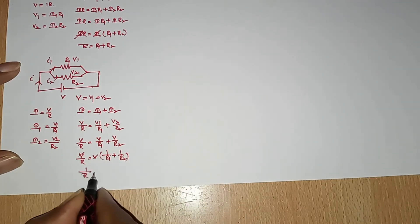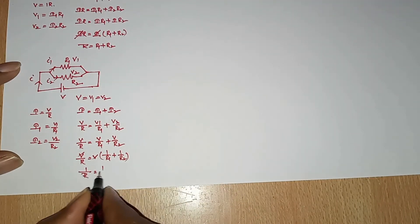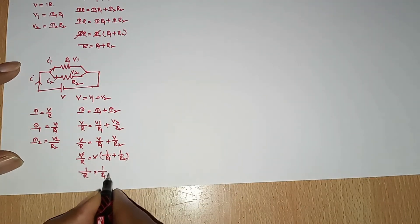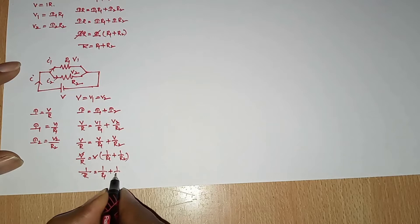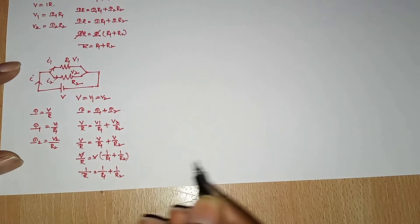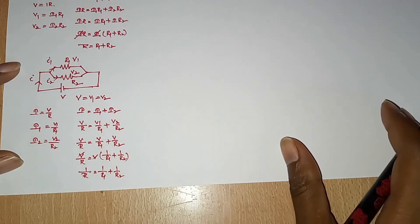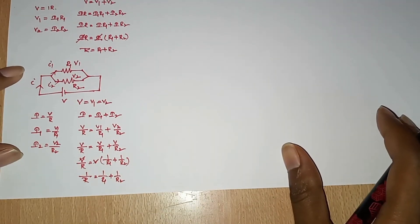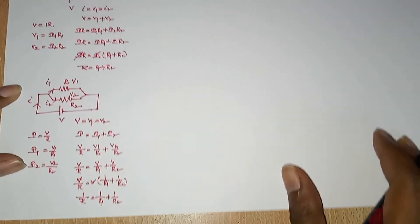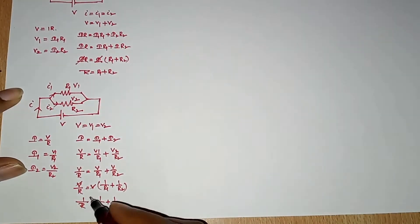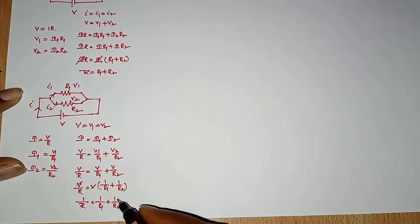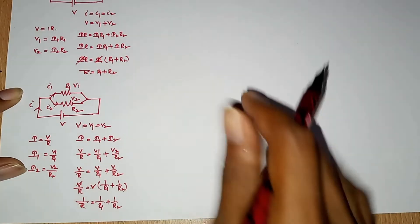Substituting and cancelling V, we get: 1 by R equal to 1 by R1 plus 1 by R2. For N resistors connected in parallel: 1 by R equal to 1 by R1 plus 1 by R2 plus ... plus 1 by Rn.